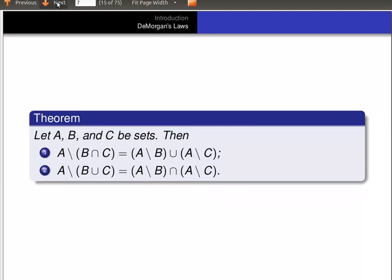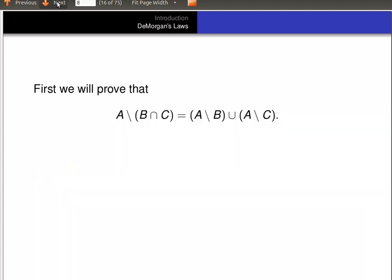Here are De Morgan's Laws — the theorem we want to prove. If A, B, and C are sets, then first: A minus (B intersect C) equals (A minus B) union (A minus C). And secondly: A minus (B union C) equals (A minus B) intersected with (A minus C).